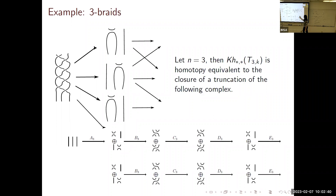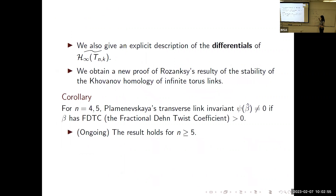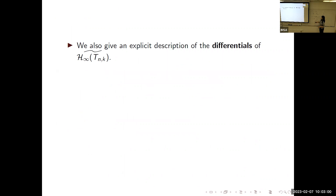We can write out all the generators and give an explicit description of the differentials. This is what we're really after, because there are already results about what the generators could be for such a complex. With our method, we can also give an explicit description of the differentials—something that Hogancamp's work on the GOR conjecture could not do. From this, you can get a new and more explicit proof of the stability results; Rozansky's original method uses multi-cone constructions and then proves that these multi-cones have a direct limit, which is much less straightforward.